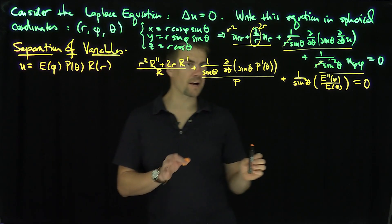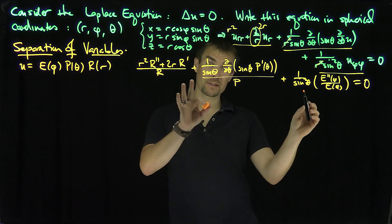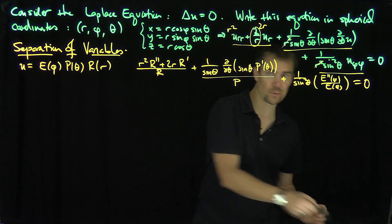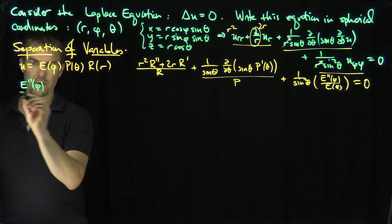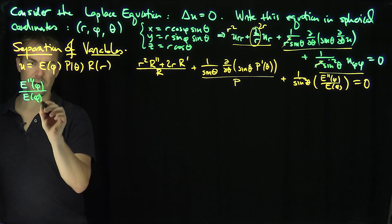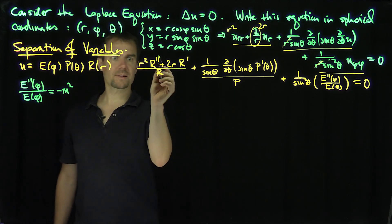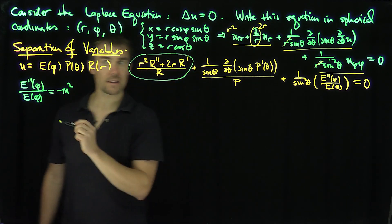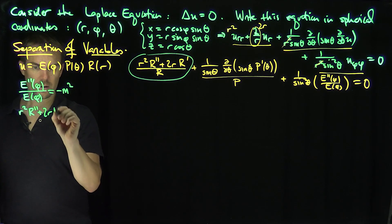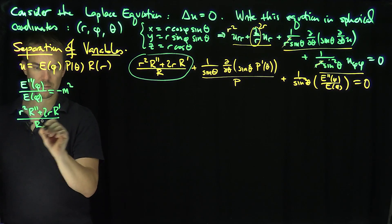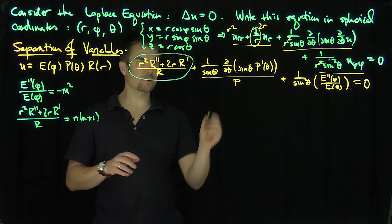Now we have the sum of three functions of independent variables equal to zero, so each part must be constant. Using the periodicity of E, we set E''/E = −m². We set the R part equal to n(n+1), giving R'' + (2/r)R' over R = n(n+1). This is a convenient choice of eigenvalues.